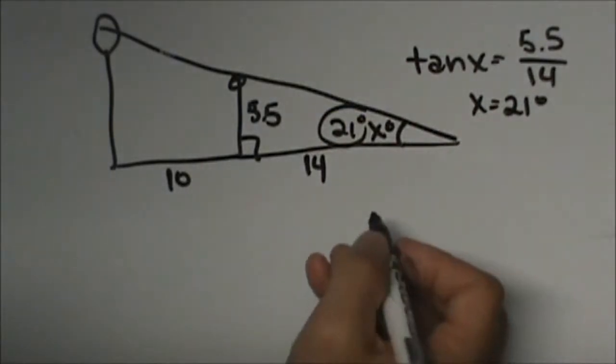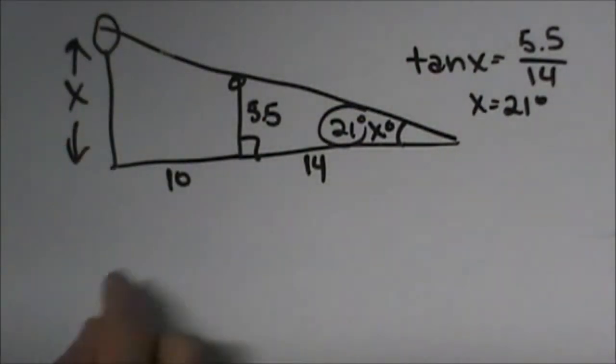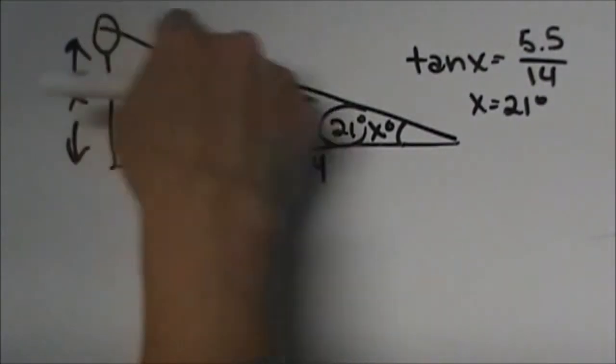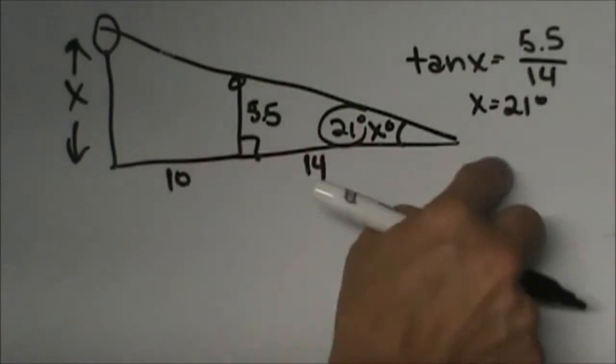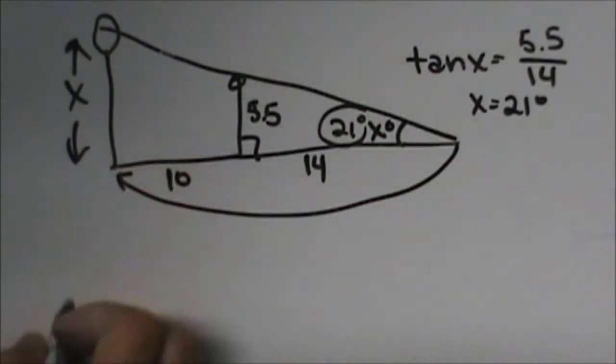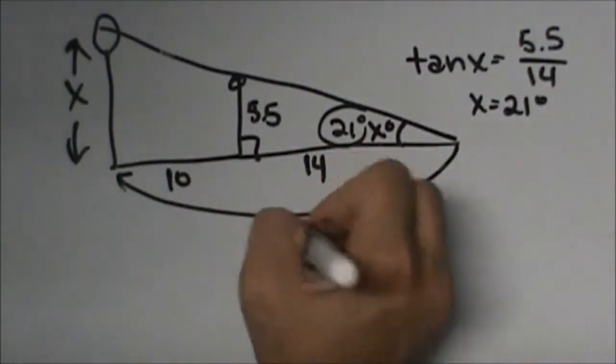So now we can use that to solve for the height of the light. Now we're going to use the opposite, and then we don't know this side, so it must be this side we're going to use. Notice, how long is this whole side? This is 10 and this is 14, so together it's 24.